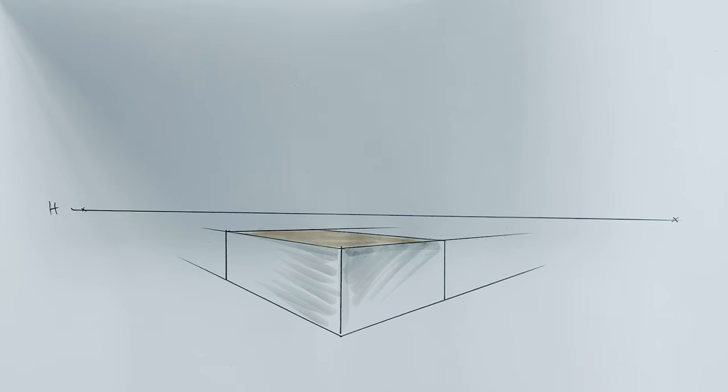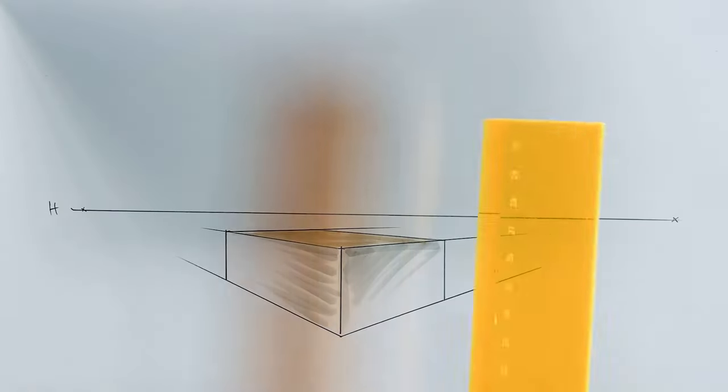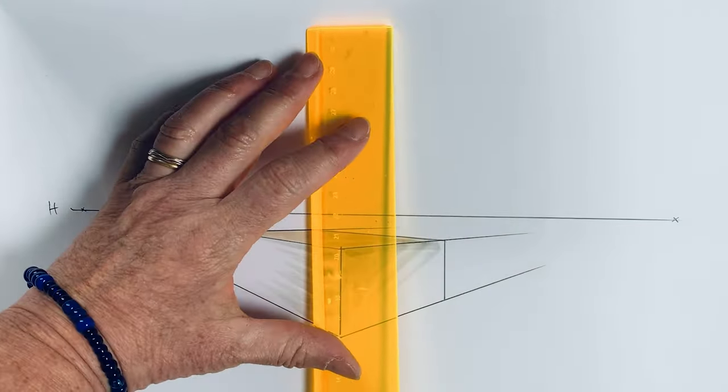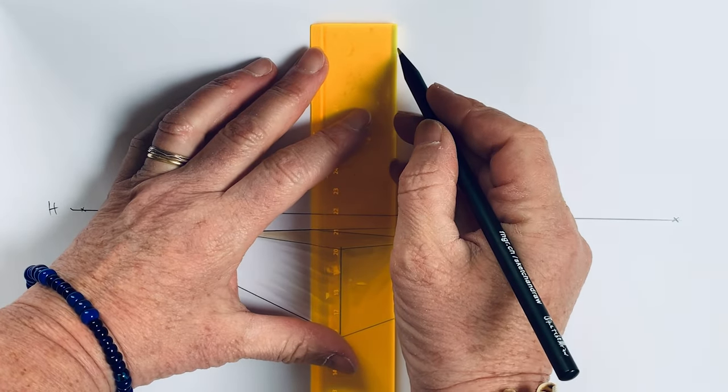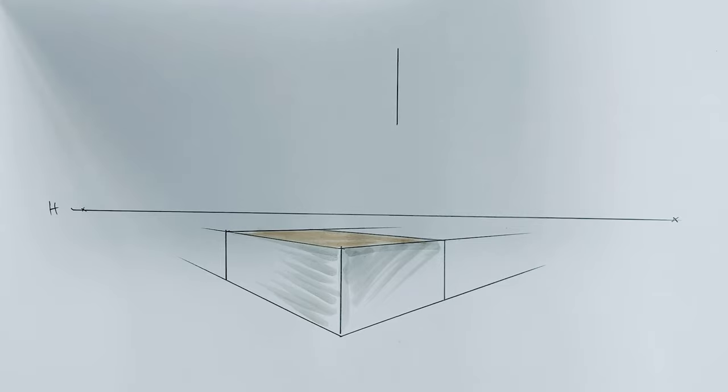And now the question is for you, can you construct an object, a box, that is above your eye level? And I give you a hint: start with this line first, draw it somewhere over the horizon here. And now it's your turn, how does it work?